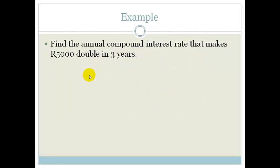This example is a lovely example because they love asking this type of example in the exam. Find the annual compound interest rate that makes R5,000 double in three years. So let's just write A equals P times 1 plus i to the n. Let's not panic just yet.